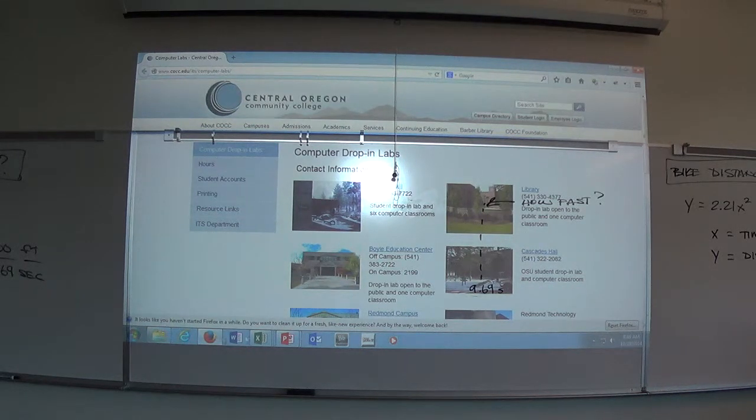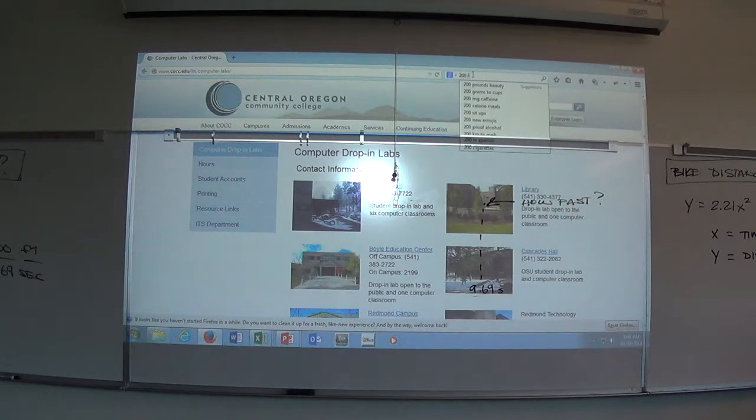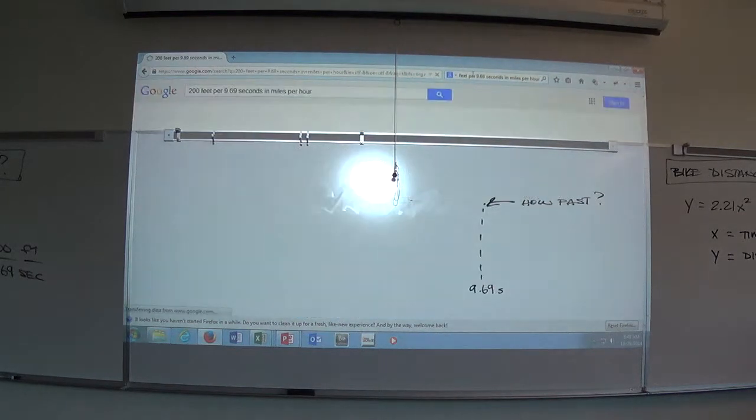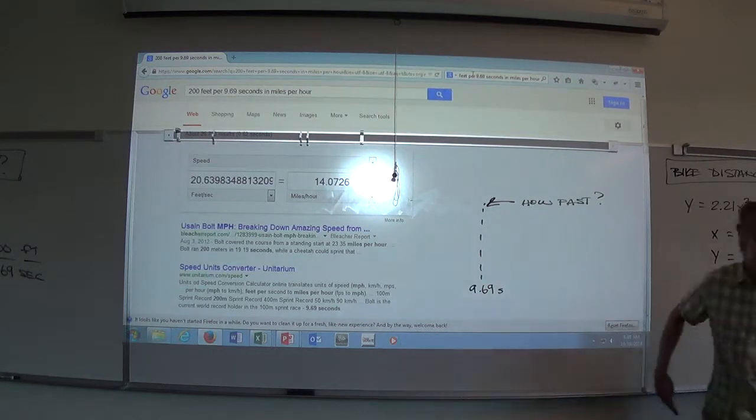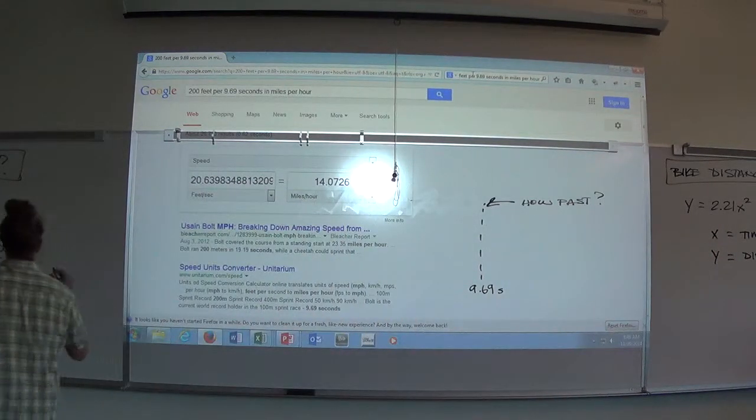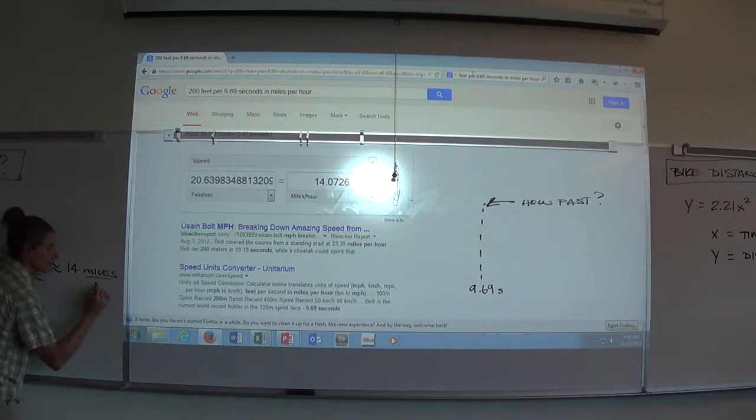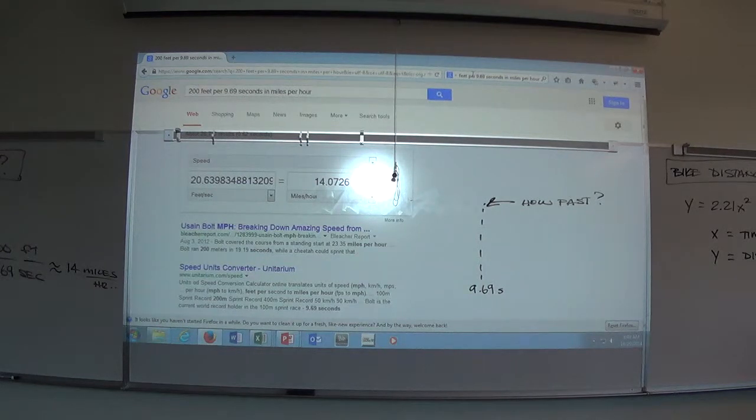Anyway, let's convert it. 200, can you guys see that little up there? 200 feet per 9.69 seconds in miles per hour, oops, per hour. Let's see what this is. Just about 14 miles an hour. Now there's a number and a unit I think we can understand. Okay, 14 miles per hour, 200 feet per 9.69 seconds is tricky.